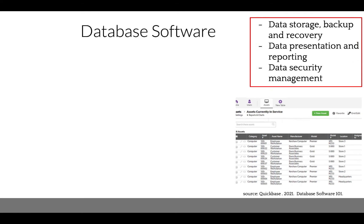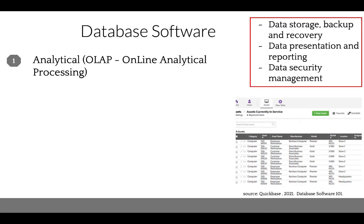Database software is generally classified into six subtypes. The first is analytical database software, also known as OLAP, which is optimized to provide quick query response time in advanced analytics. It is used for fast processing of massive amounts of data with few or no filters.